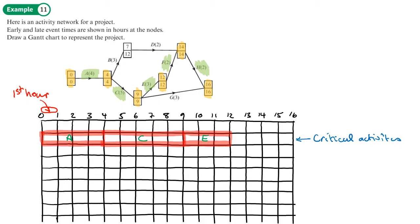And then not lastly, then we've got F from 12 to 14. And then H goes from 14 to 16. So we'll just put in here, F in there, and H here. Right, now we fill in the other activities.